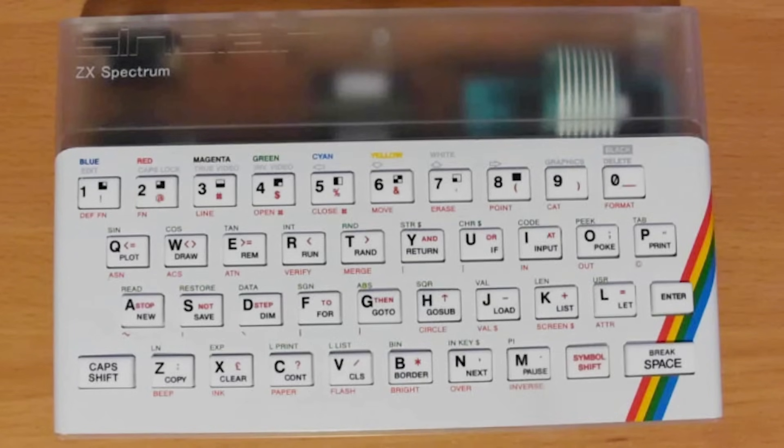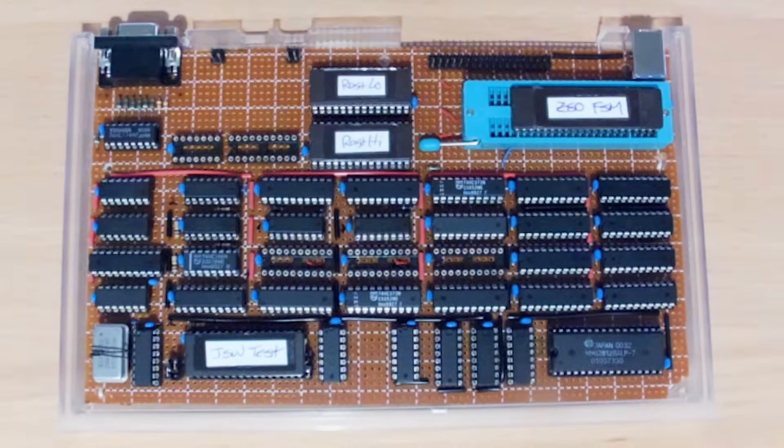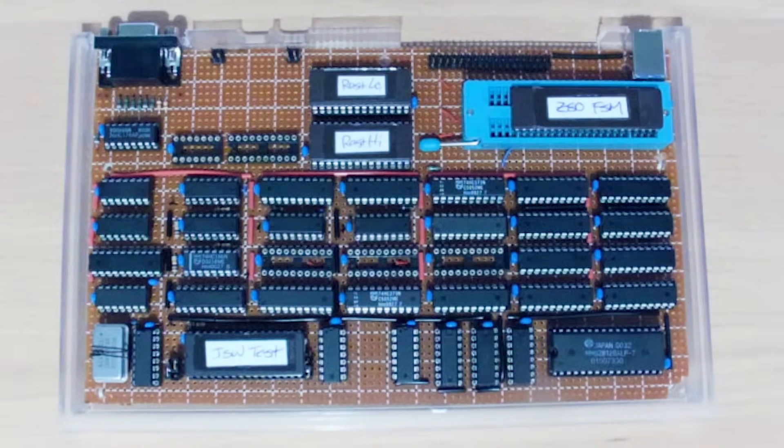I'm building the ZX Spectrum, but not with a normal Z80 CPU. This one's based on a random access Turing machine, a modernized version of Alan Turing's 1936 abstract machine.